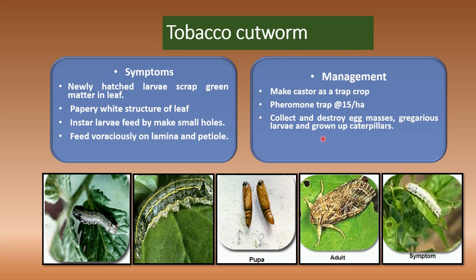Management practices for tobacco cutworm: use castor as a trap crop and pheromone traps. Collect and destroy egg masses, gregarious larvae, and grown-up caterpillars. Spray SNPV (Spodoptera nuclear polyhedrosis virus) at 1.5 × 10¹² PIB per hectare in evening hours. Follow any one of these management methods for control of tobacco cutworm.